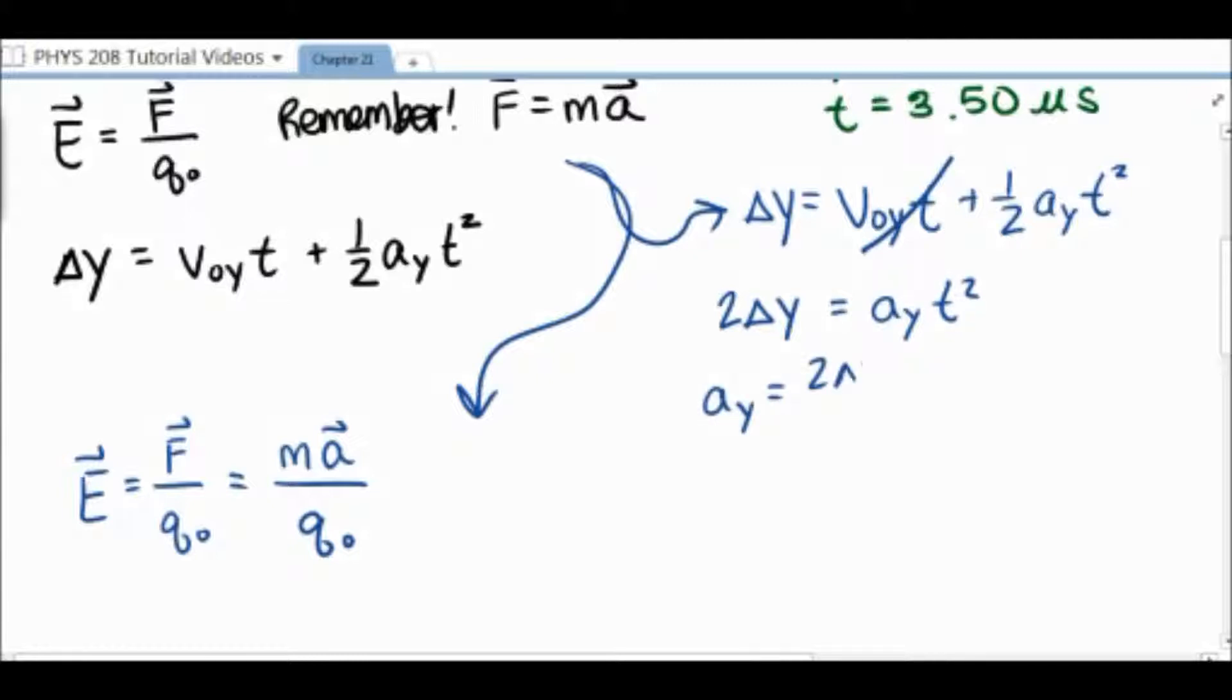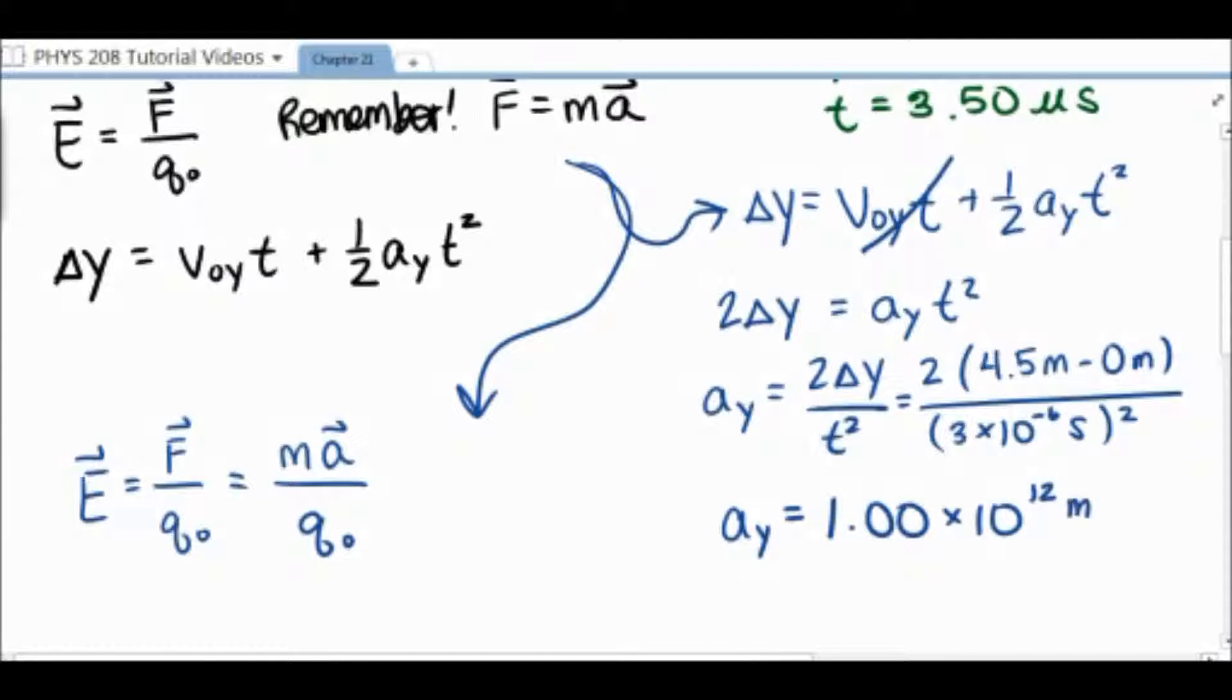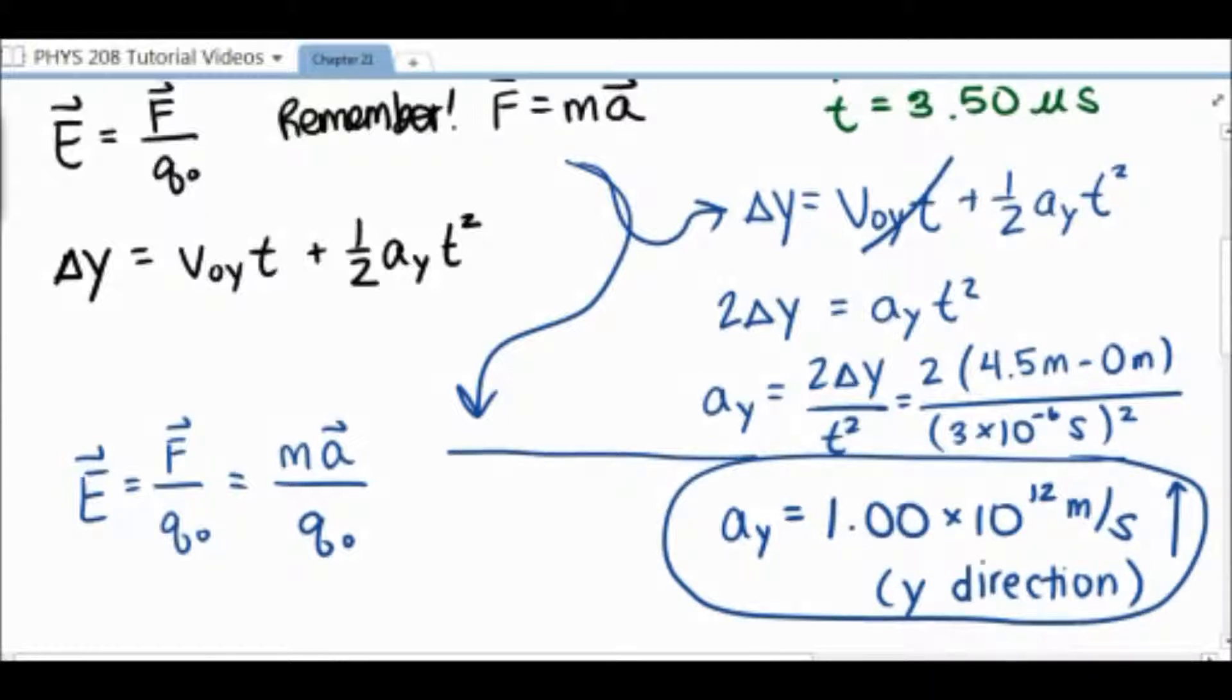And when we rearrange the equation, we find that A y is 2 times the change in y over t squared, which in this case is 2 times 4.5 minus 0 over 3 times 10 to the negative 6 seconds squared. And then we find that A y is equal to 1.00 times 10 to the 12 meters per second squared in the positive vertical axis, which is the y direction. So it accelerates straight upwards at 1 times 10 to the 12 meters per second squared.